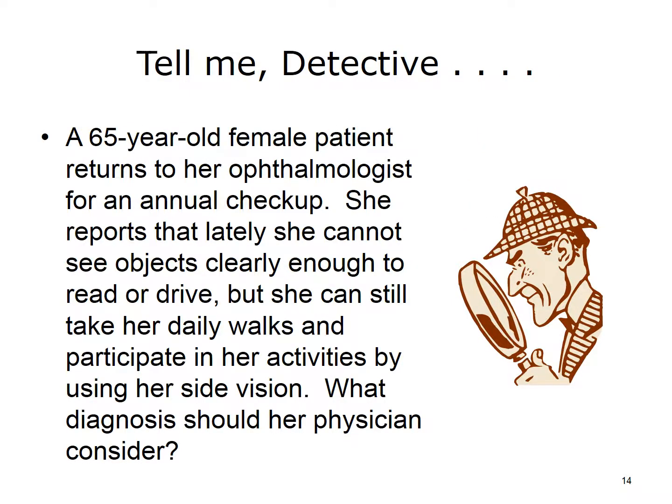Now let's have some fun playing detective. A 65-year-old female patient returns to her ophthalmologist for an annual checkup. She reports that lately she cannot see objects clearly enough to read or drive, but she can still take her daily walks and participate in her activities by using her side vision. What diagnosis should her physician consider? Macular degeneration, or age-related macular degeneration, is a leading cause of vision loss in adult patients 60 and older. This disease causes the destruction of sharp central vision, but it causes cells in the macula to die.